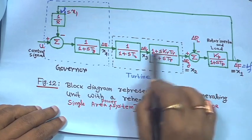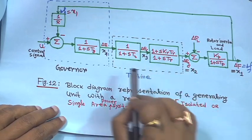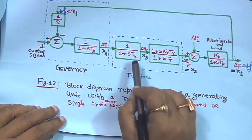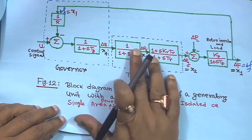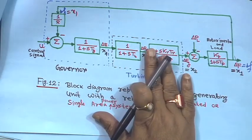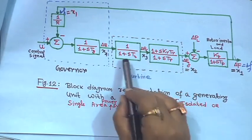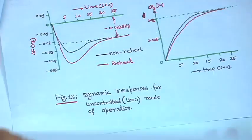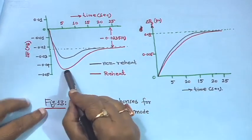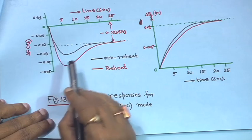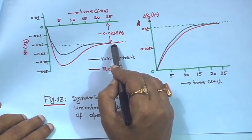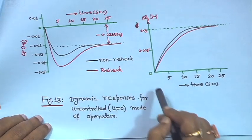So this term will not exist; only the other term will exist. In that case the A matrix will be 3×3 — this term should not be there for non-reheat. For reheat type the peak frequency deviation will be slightly higher compared to non-reheat, but the steady-state error will remain the same because r and k_p values are the same for both cases.